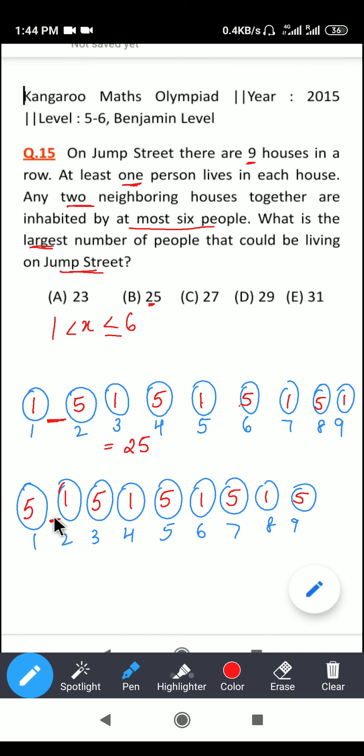Okay, so in this combination, if we find the total number of people, it is 1, 2, 3, 4, 5, which is 25, plus 1, 2, 3, 4, which is 4, which is 29.